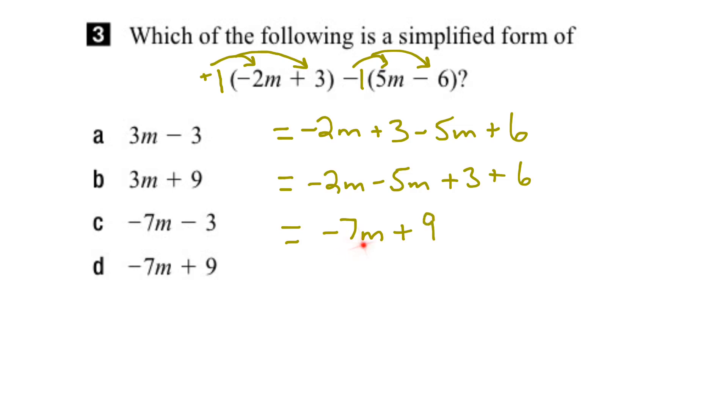So if we look down the list of options here, we can see that D is the right answer. Negative 7m plus 9. And there you go.